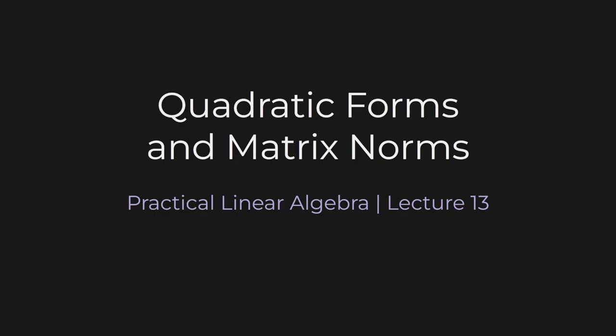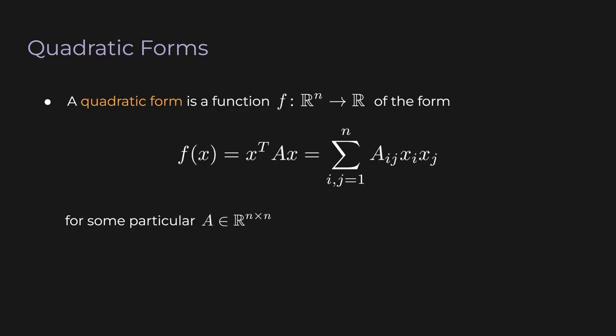This time we'll introduce quadratic forms and matrix norms. A quadratic form is a function f from R^n to R of the form x transpose Ax for some particular square matrix A. So f takes any vector x in R^n as an input and outputs a scalar, x transpose Ax. It's called a quadratic form because x appears twice in this matrix vector product. We can also write it as a sum of the elements of A and x, to remind us of what the matrix vector multiplication is doing.